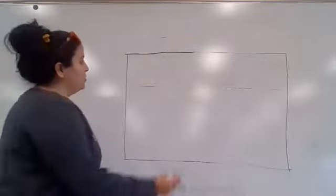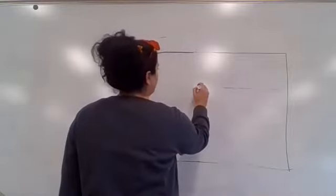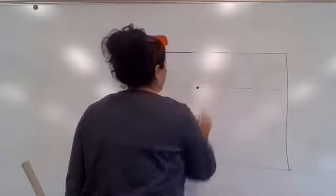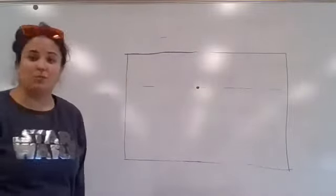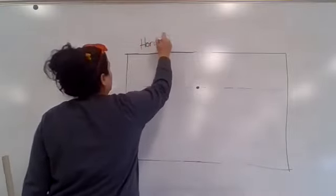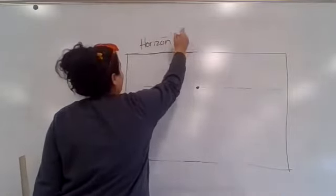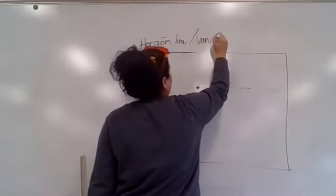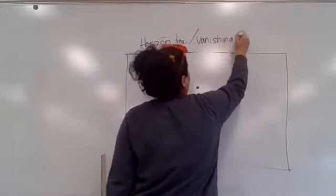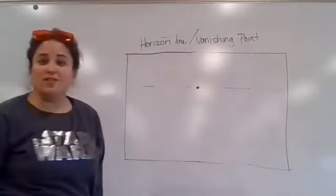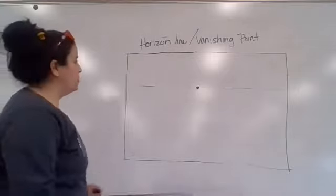And then what you're going to do is you're going to pick a spot close to the middle for your vanishing point. Now remember, horizon line and the vanishing point. Those always go together.